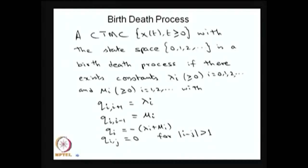Now I am moving into the special case of continuous time Markov chain, that is the birth-death process. This is a very important time-homogenous continuous time Markov chain because many scenarios can be mapped with the birth-death process, either with a finite state or infinite state. Let me first give the definition of a birth-death process. I start with a continuous time Markov chain — a time-homogenous CTMC — with the state space countably infinite (it can be finite also).